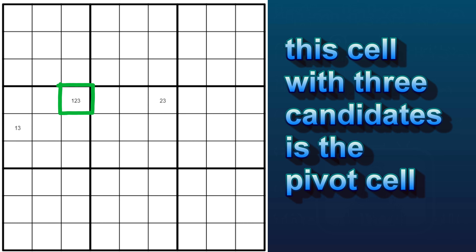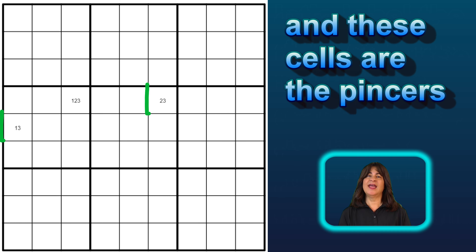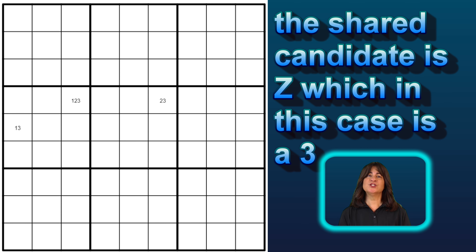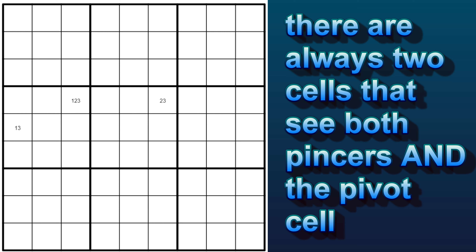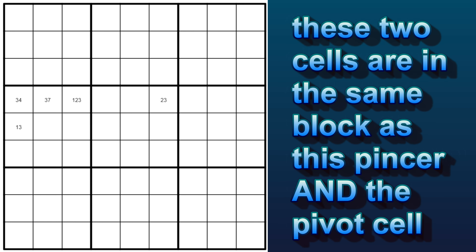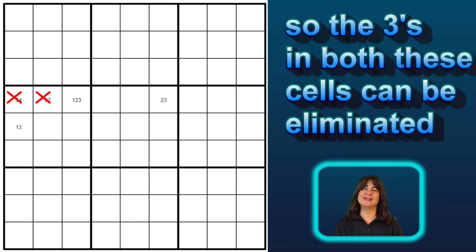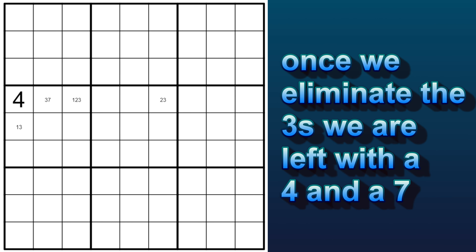So, to be clear, this cell with three candidates is the pivot cell, and these cells with just two candidates are the wings or pincers. Any cell that sees all three cells — the pivot and the two pincers — cannot have the Z candidate. That's the shared candidate between the pincers, which in this case is a three. There are always two cells that see both pincers and the pivot cell — this cell and this cell. These two cells are in the same block as this pincer and the pivot cell, and in the same row as this pincer. So the threes in both these cells can be eliminated, and that leaves us with a four and a seven.